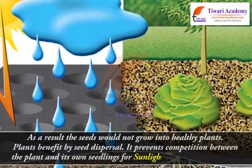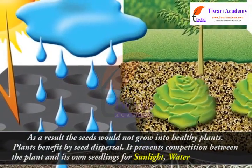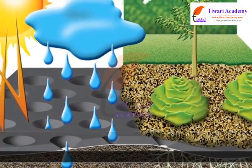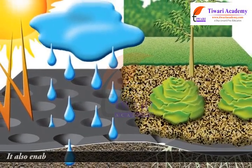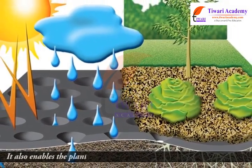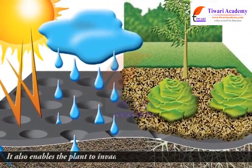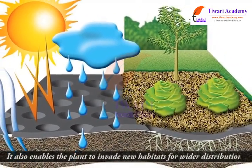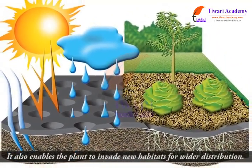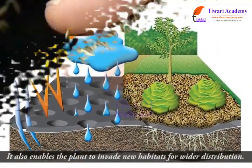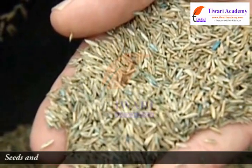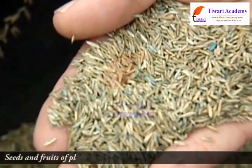Seed dispersal prevents competition between the plant and its own seedlings for sunlight, water, and minerals. It also enables the plant to invade new habitats for wider distribution. Seeds and fruits of plants are carried away by wind, water, and animals.